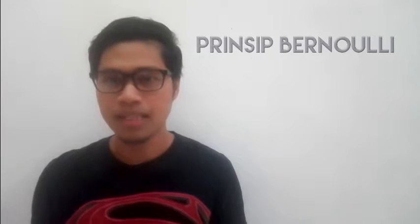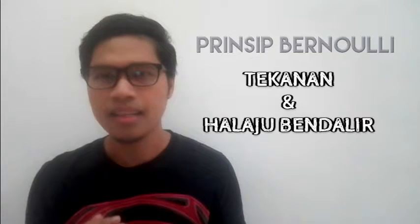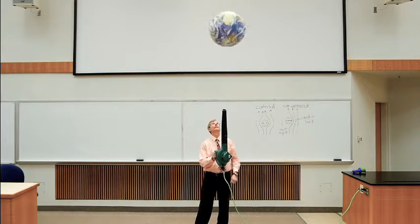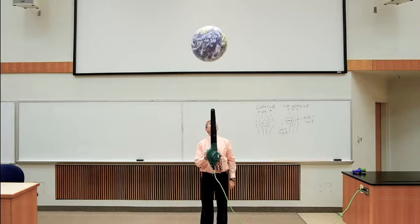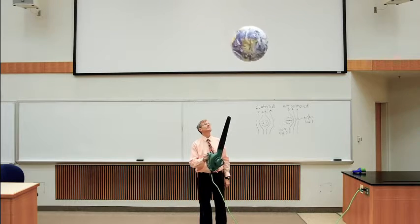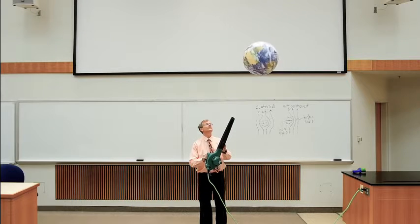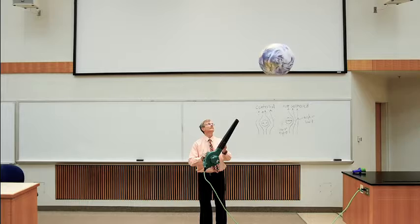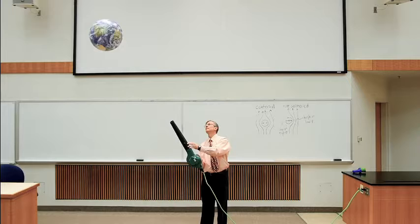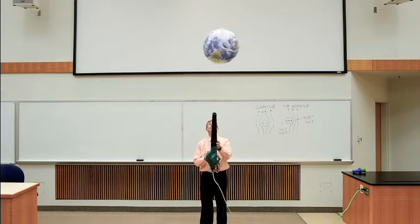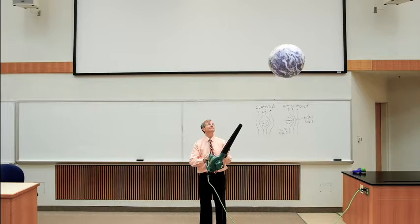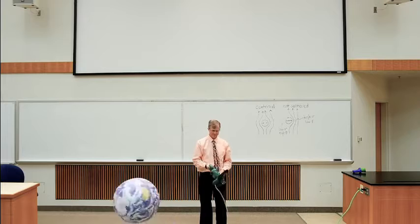Prinsip Bernoulli ini menerangkan perkaitan antara tekanan dan halaju pergerakan satu bendali. Menurut prinsip Bernoulli, suatu bendali yang bergerak — contohnya udara yang bertiup — pada halaju yang berbeza akan menghasilkan tekanan yang berbeza. Fenomena ini dapat dilihat dalam eksperimen ini, di mana bola itu kekal di dalam aliran udara yang laju dan tidak tertolak ke tepi. Sebaliknya, aliran udara yang laju itu menghasilkan kawasan tekanan yang lebih rendah dan menyebabkan wujudnya daya yang menolak dan mengekalkan kedudukan bola itu di tengah.